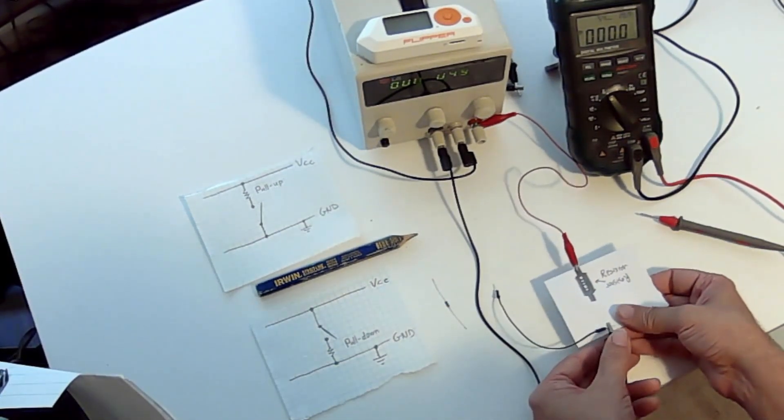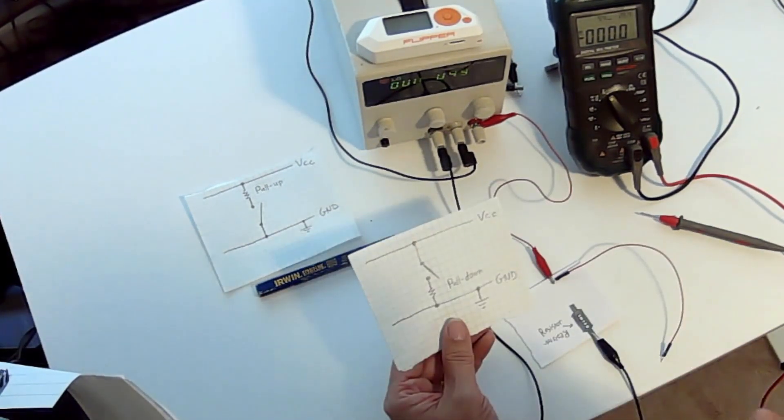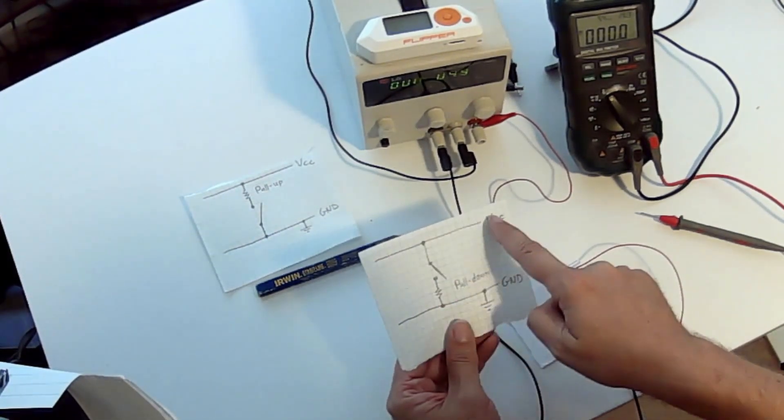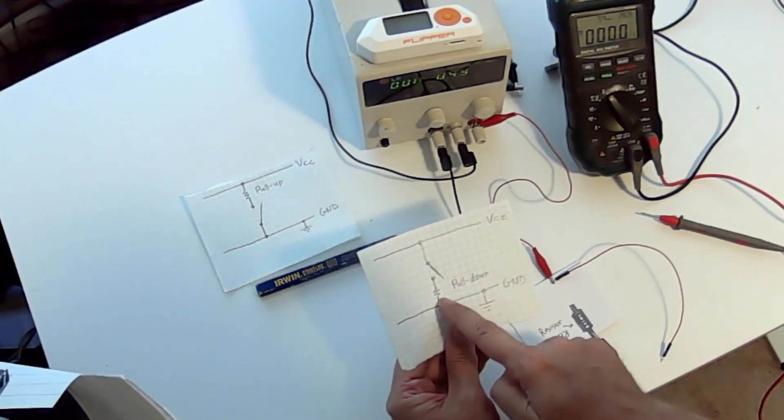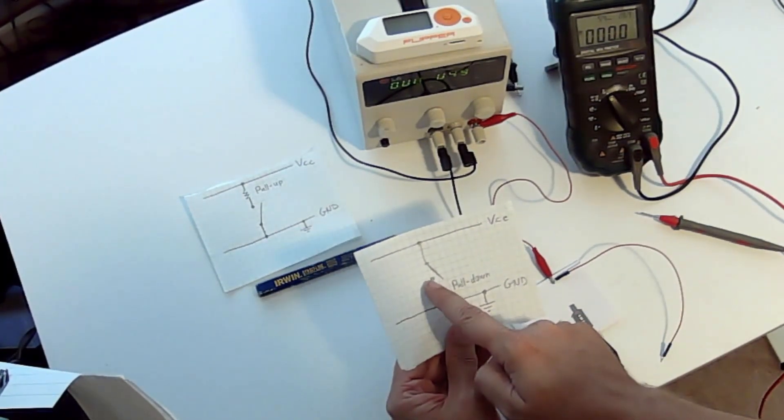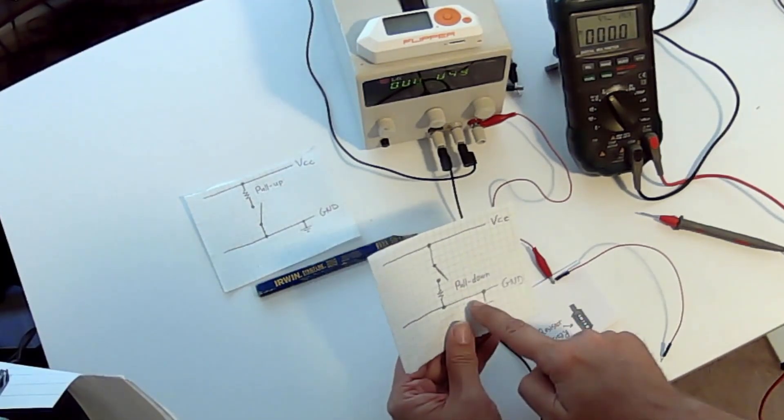So next up is the pull-down. So for the pull-down, we have our VCC going to our wire, and then we have our ground going through our resistor. And so the point here is still going to be the same as ground. So we're going to still be at zero volts.